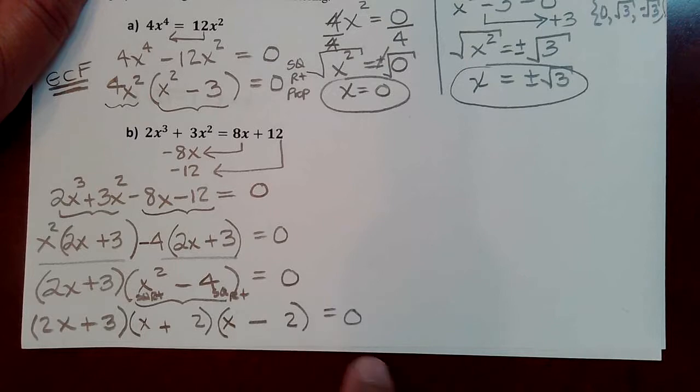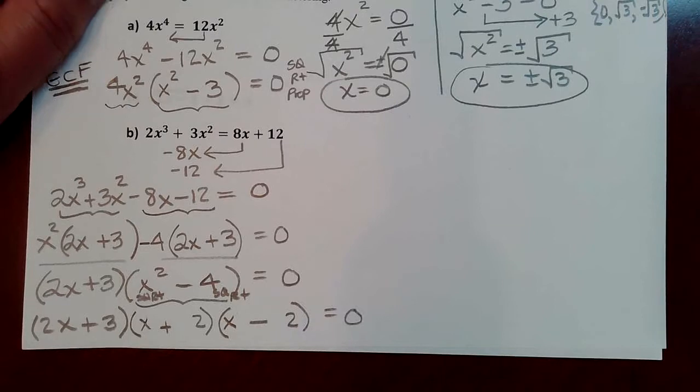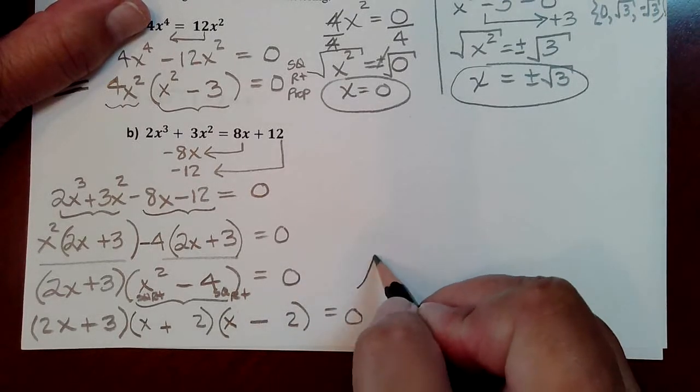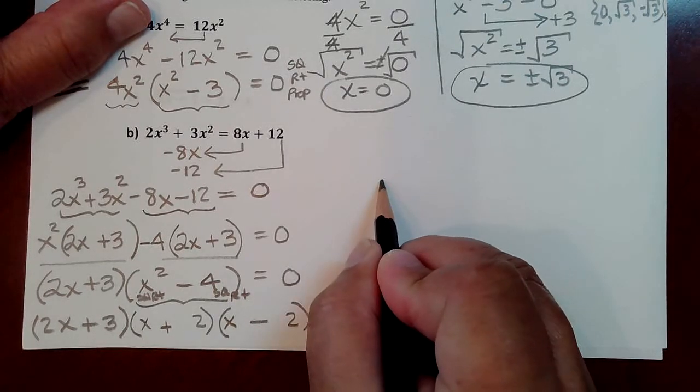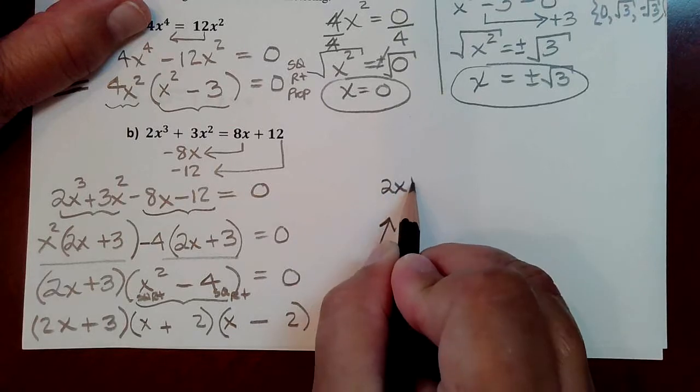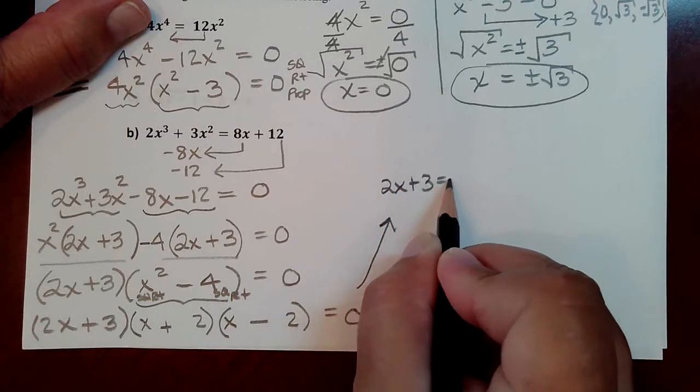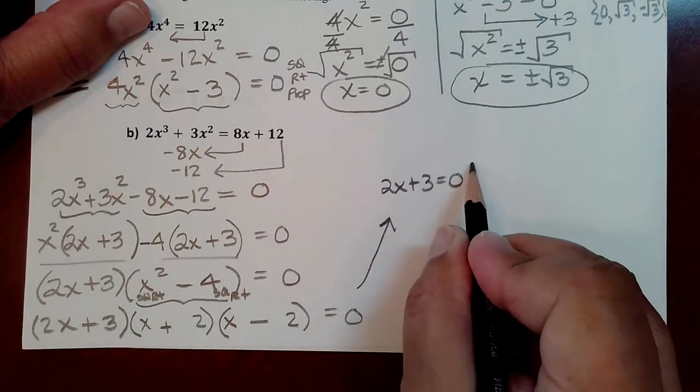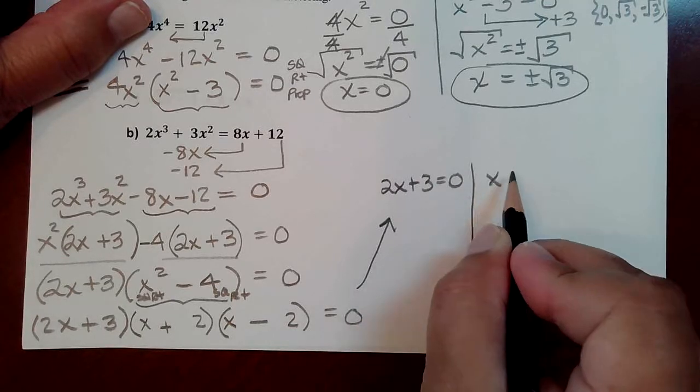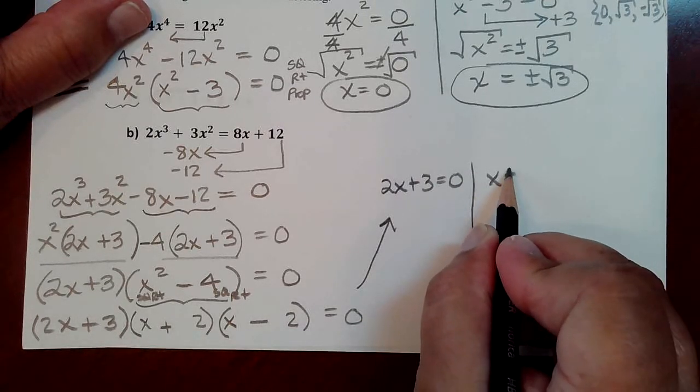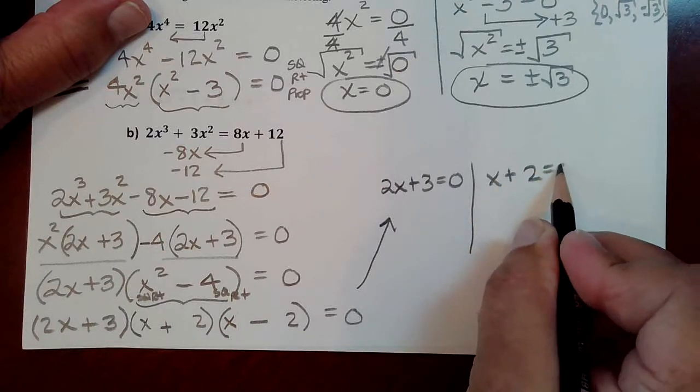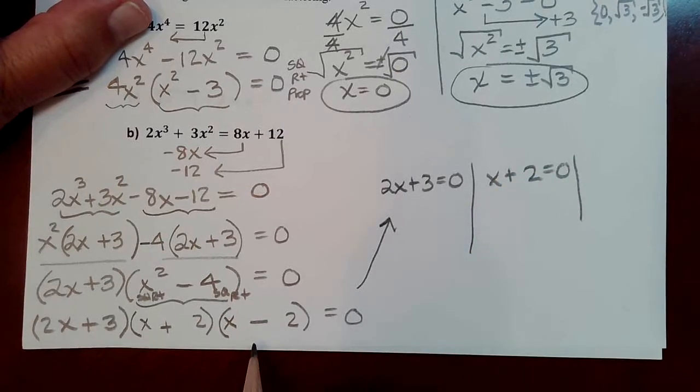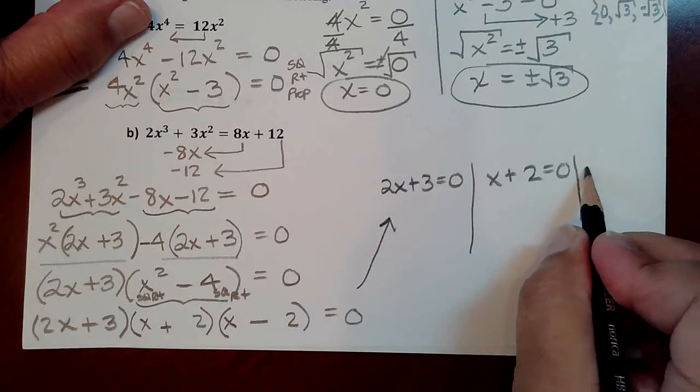So we have all first degree factors. And when your factors are, when you factored as completely as you can, then you will continue the problem to find the solutions by setting each factor equal to 0. So I'm going to take that first one, set it equal to 0, and solve it. I'm going to take the next factor called x + 2, set that equal to 0, and solve it. And then I'll take this last factor, x - 2, and set it equal to 0, and solve it.